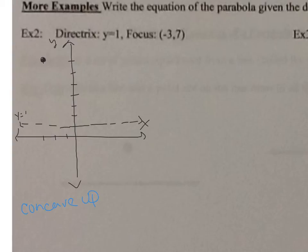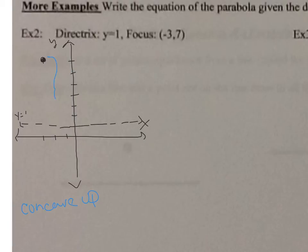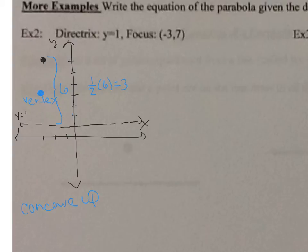Next, find the vertex. The vertex is midway between the directrix and the focus. Counting from the directrix up to the focus, that's 6 units. Half of 6 is 3, so the vertex is 3 units up from the directrix. That puts the vertex at (−3, 4).